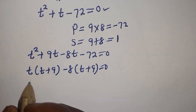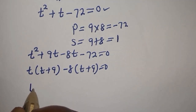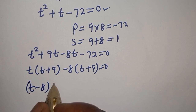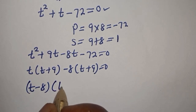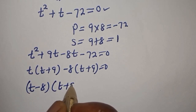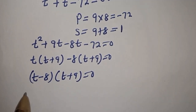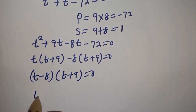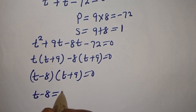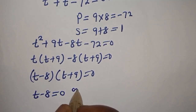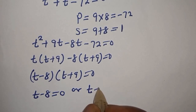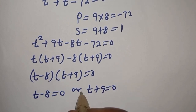This gives T minus 8, bracket T plus 9, is equal to 0. There are two cases here: T minus 8 is equal to 0, or T plus 9 is equal to 0.